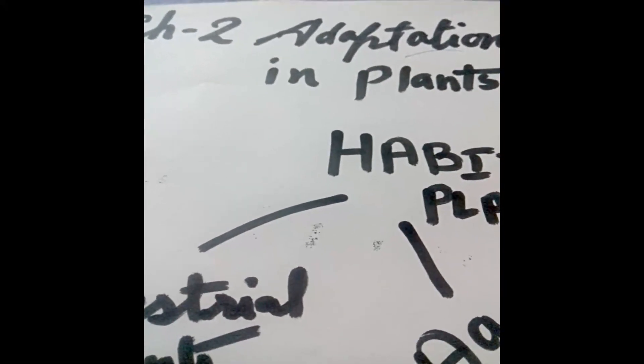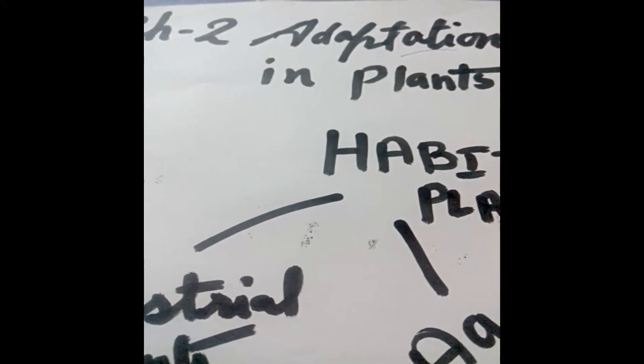Students, read this chapter one more time from your book and understand it. Also, underline all the difficult words, difficult spellings, and scientific terms, then write them one time in your copy and learn them. Thank you.